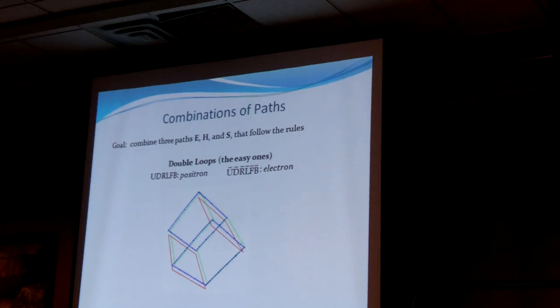They all have to go in the same direction. What Lockyer says are the positron and the electron are just all three being double loops — those do correspond with what he's saying. If you want to think of that as the positron or the electron, that part I agree with.